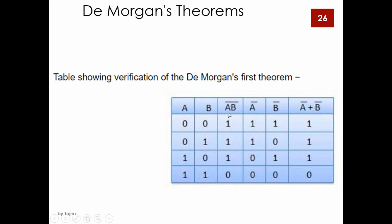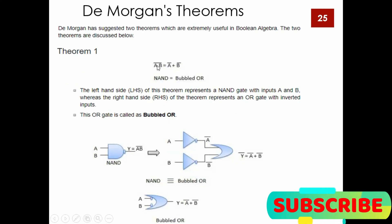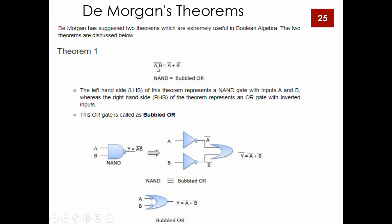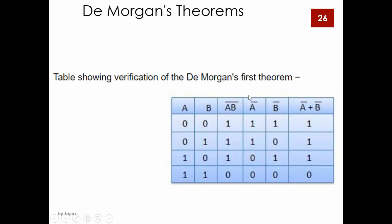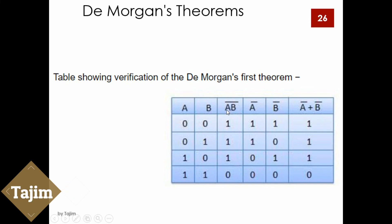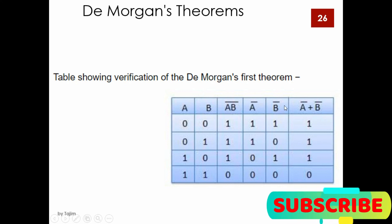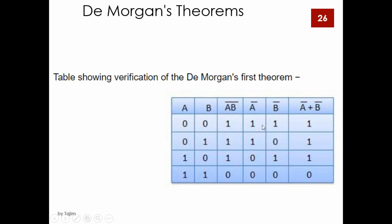We can see that we have a-bar plus b-bar. This is a two-input case: 2 squared equals 4 inputs — 0,0; 0,1; 1,0; 1,1. We have a-bar plus b-bar, which corresponds to De Morgan's theorem demonstration.